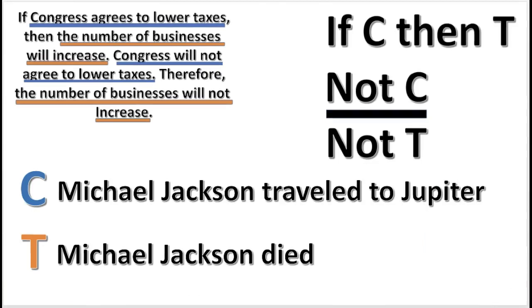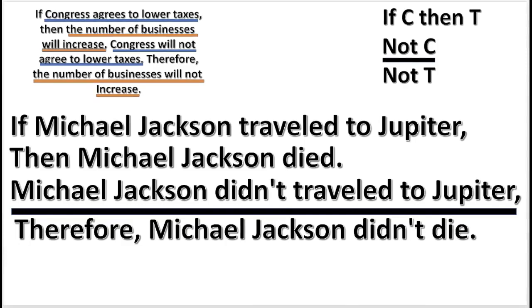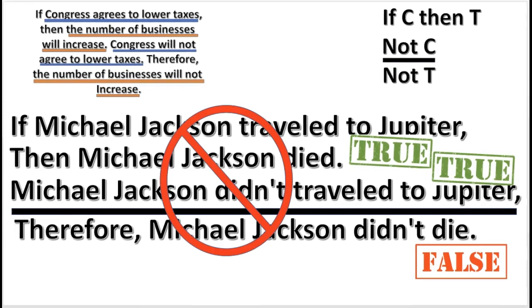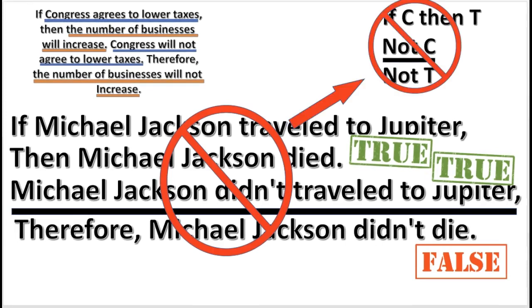We will now invent two new statements to substitute the place of C and T that will make the premises true and the conclusion false. Here are two possibilities: C for 'Michael Jackson traveled to Jupiter' and T for 'Michael Jackson died.' When we substitute these terms, it turns into this argument. Since the Michael Jackson argument has true premises and a false conclusion, it is clearly invalid, which means that the form is invalid, which means that the original argument is invalid.